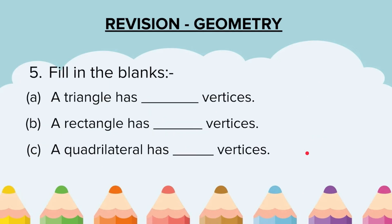Question 5: Fill in the blanks. A triangle has dash vertices. A rectangle has dash vertices. A quadrilateral has dash vertices. Vertices means the corners.